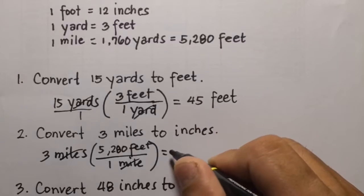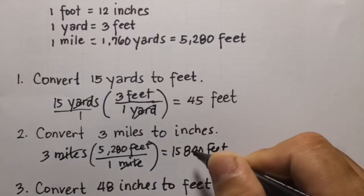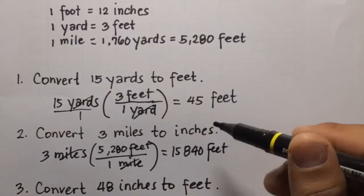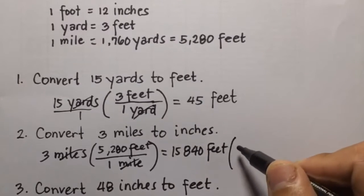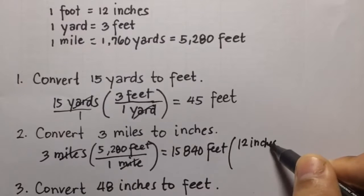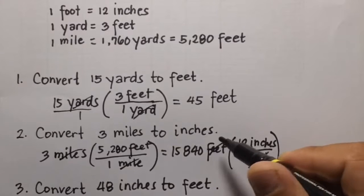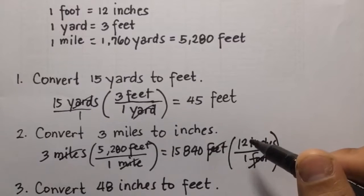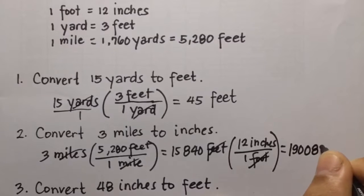3 times 5,280 equals 15,840 feet. Next, we convert feet to inches: 15,840 feet times 12 inches over 1 foot. We cancel feet, then multiply 15,840 times 12, giving an answer of 190,080 inches.